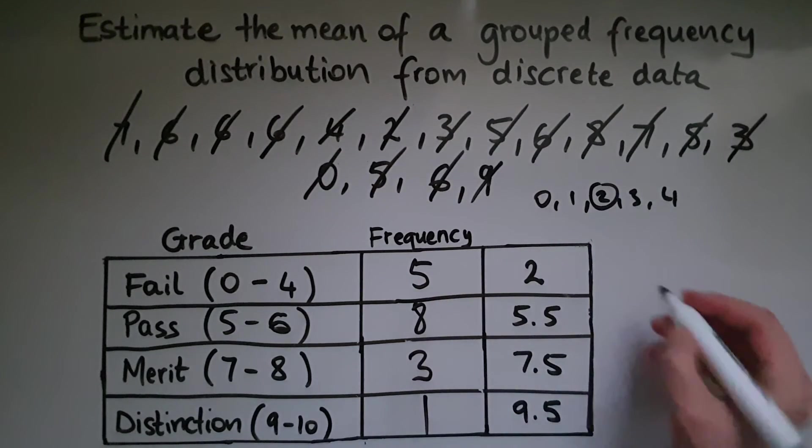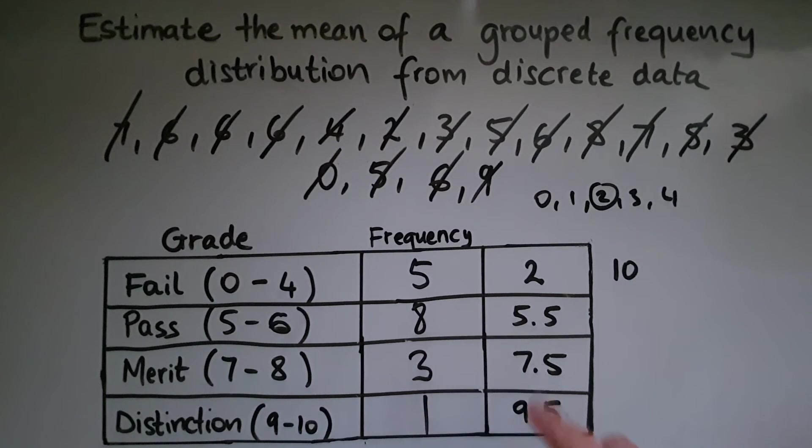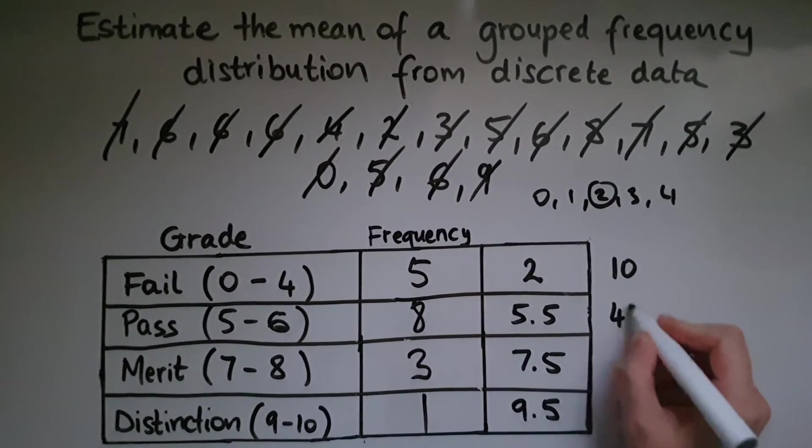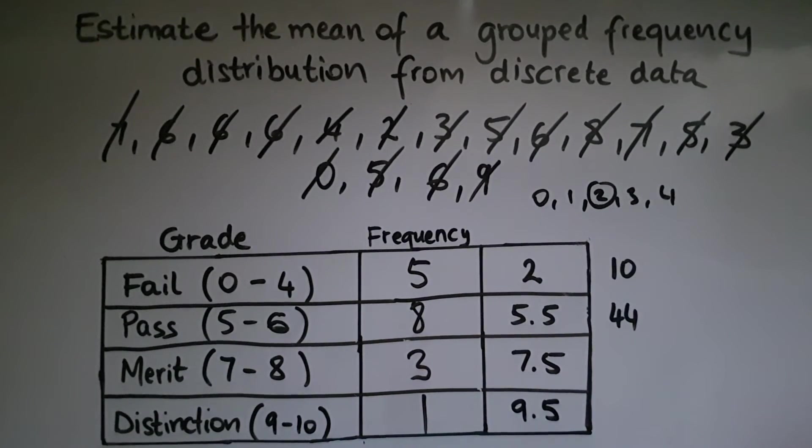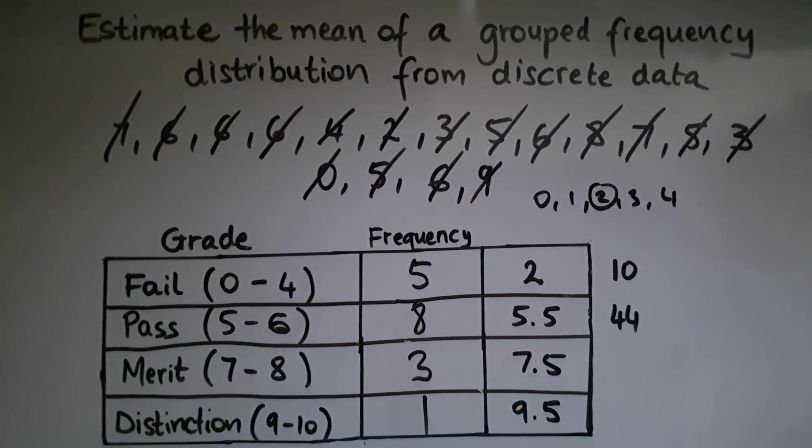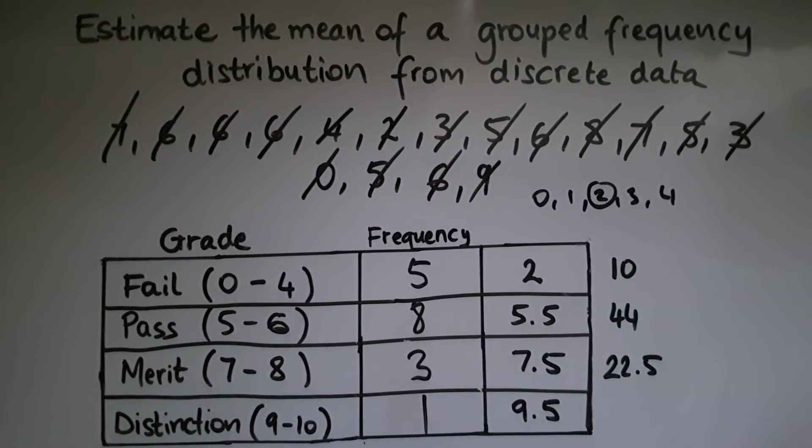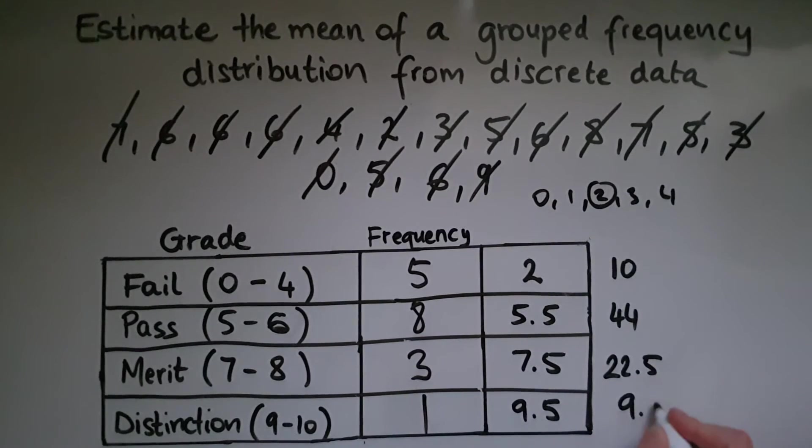And we multiply it by that mid value or that midpoint, which in this case is a 2. So 2 lots of 5 is 10, 8 lots of 5.5 is 44, 3 lots of 7.5 is 22.5, and 1 lot of 9.5 is just 9.5.